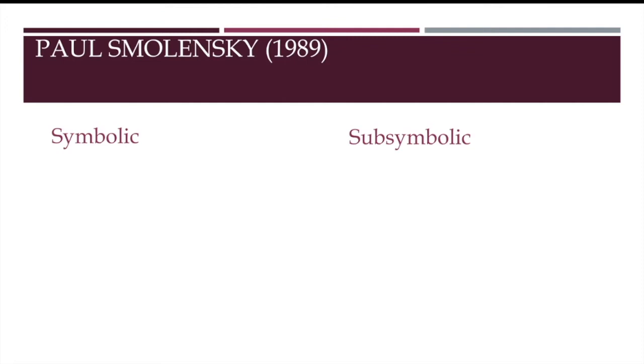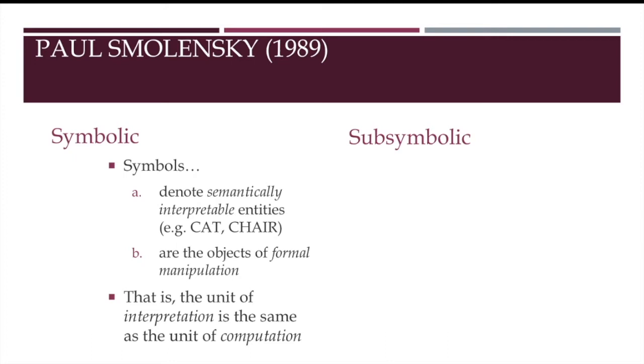Researcher Paul Smolensky, in an important paper in 1989, said that perhaps the most fundamental contrast between the classical and connectionist paradigms has to do with the semantic interpretation of the formal models. He says that the classical paradigm is symbolic, but the connectionist paradigm is sub-symbolic. This means that in a symbolic paradigm, like the classical one, you have symbols that denote semantically interpretable entities, such as a cat or a chair. And at the same time, they are the objects of formal manipulation. Remember how, in Haugeland's view, the tokens lead syntactic and semantic lives at the same time. They were objects of computation, but objects of interpretation. And so here, this is the expression of that. The unit of interpretation is the same as the unit of computation.